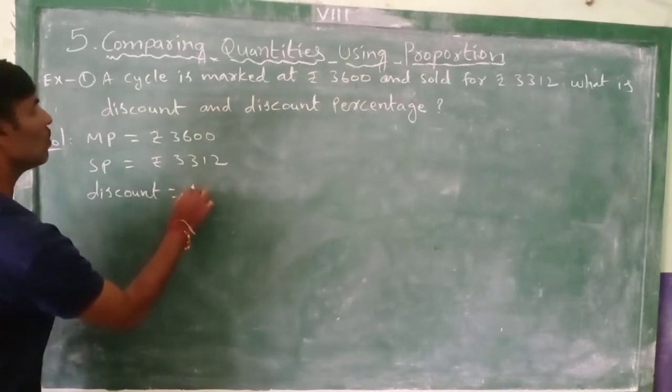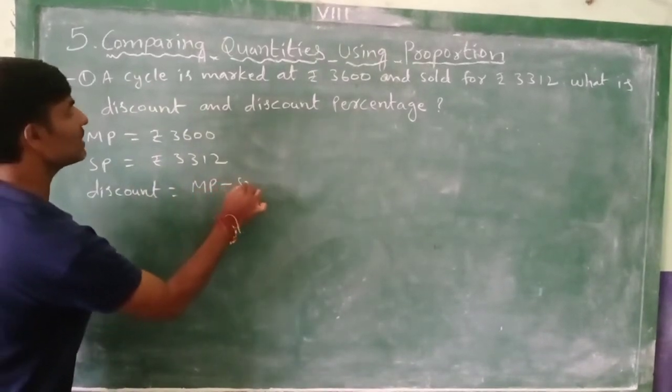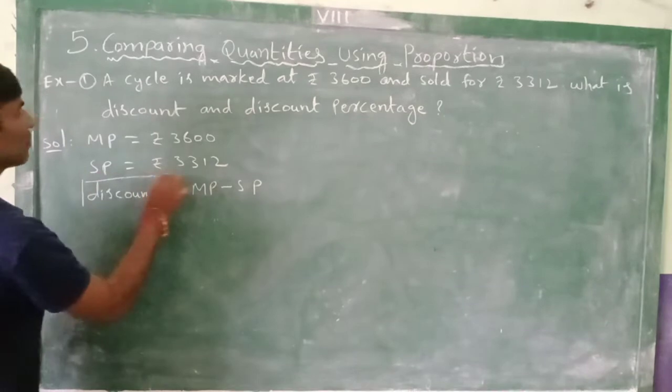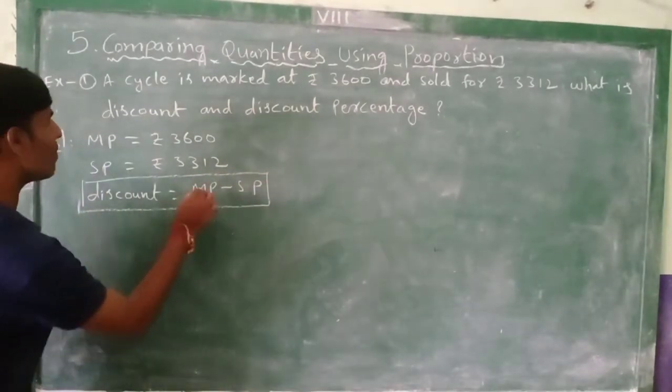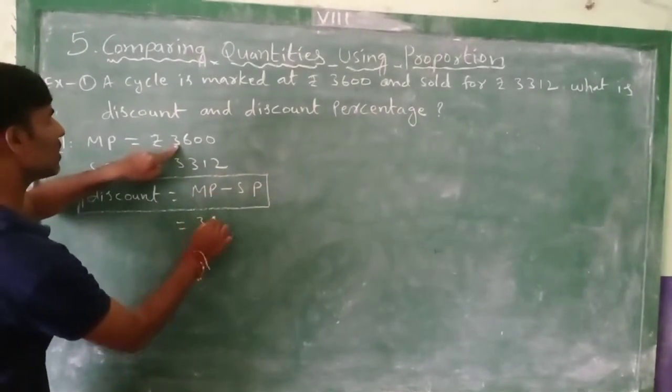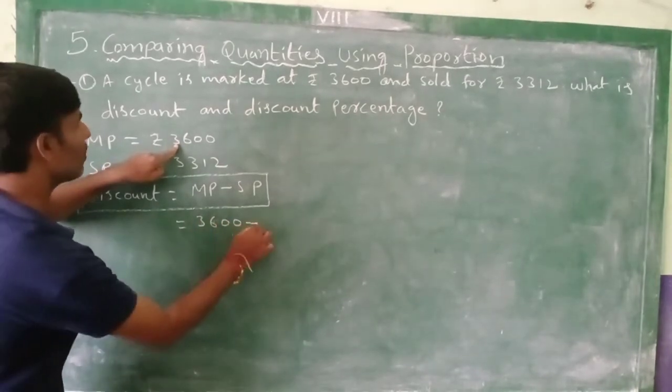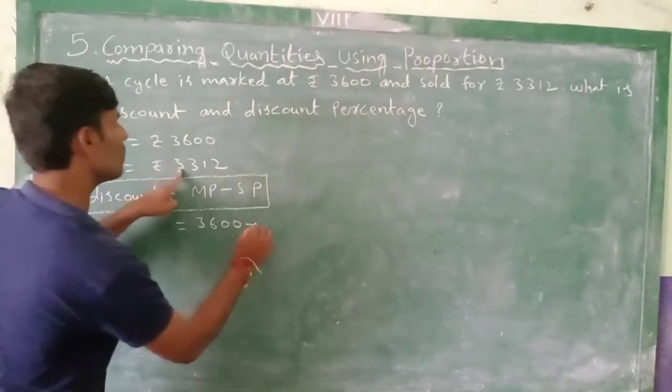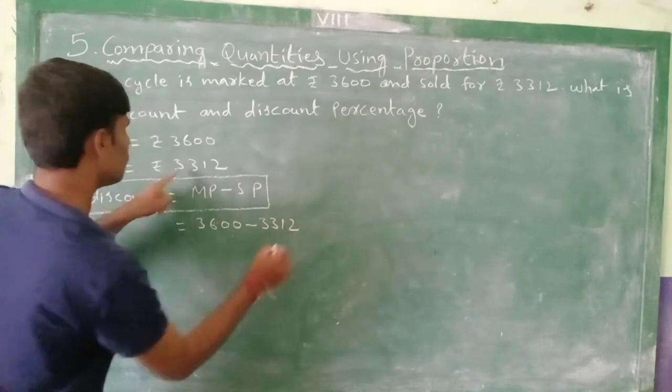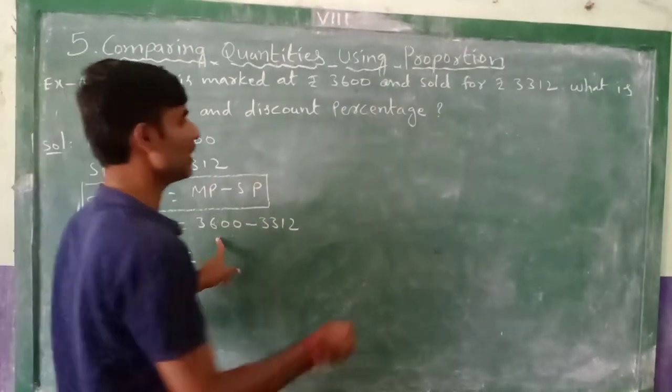Discount equal to marked price minus selling price. So marked price equal to 3600 minus selling price equal to 3312. Subtraction is doing here.